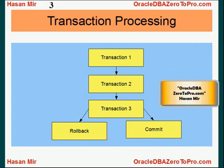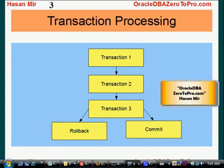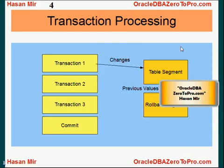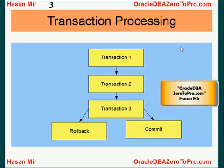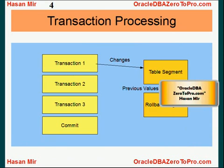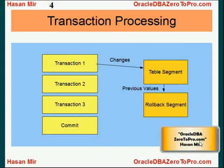Alternatively, we can issue a rollback command. Rollback means something went wrong — we're not happy with this group of transactions, so we want nothing to be finalized and saved in the database. In order to do that, we issue a rollback command. So what is the role of the rollback segment?